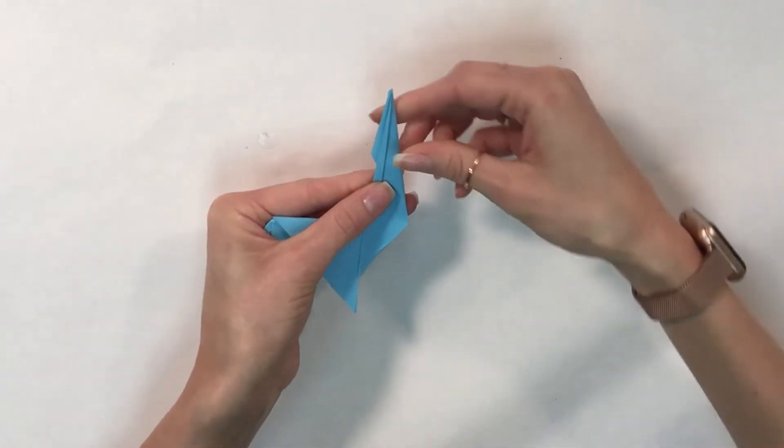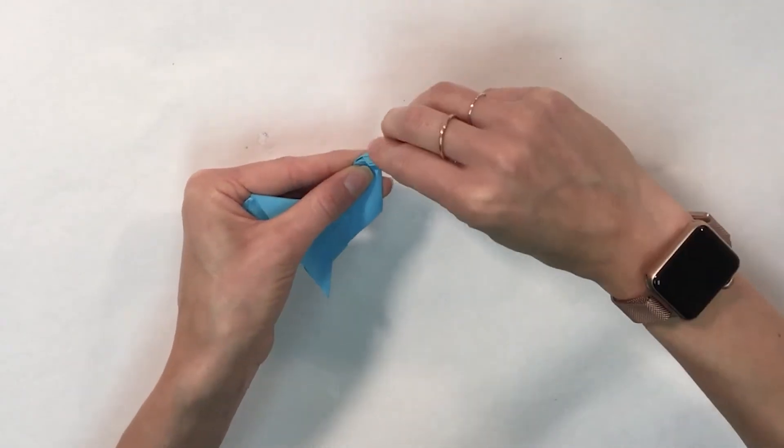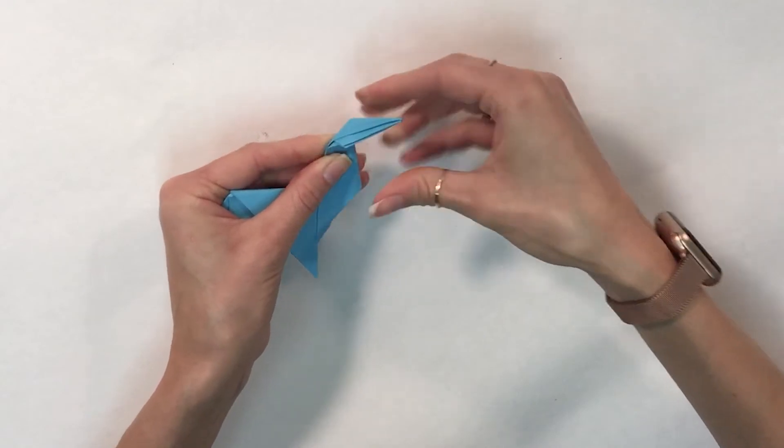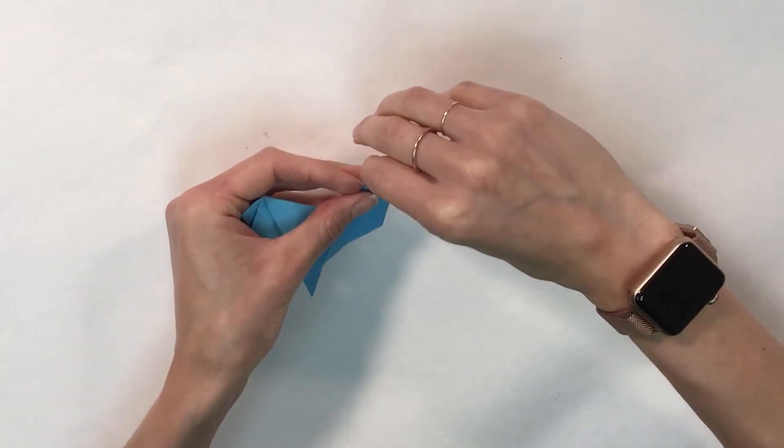And then I need to make my head. So I'm just going to kind of gently pre-bend the paper a little bit. Not a lot because there's a lot of layers of paper there and they're going to be adjusted.